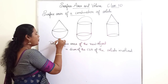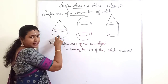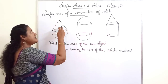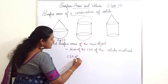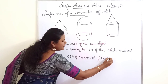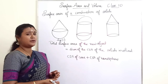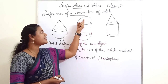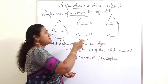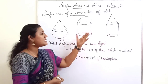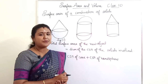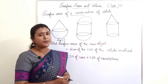For example, in figure 1 we have a combination of cone and hemisphere, so the total surface area equals CSA of cone plus CSA of hemisphere. For a combination of a cylinder with 2 hemispheres, we use CSA of cylinder plus 2 times CSA of hemisphere. For a cylinder with a cone, it is CSA of cylinder plus CSA of cone. In this way we find the total surface area of combination of solids.